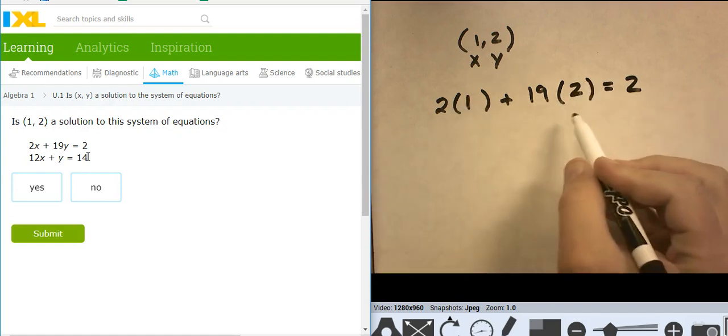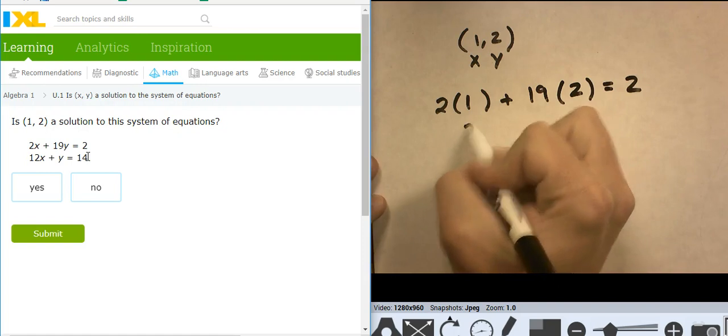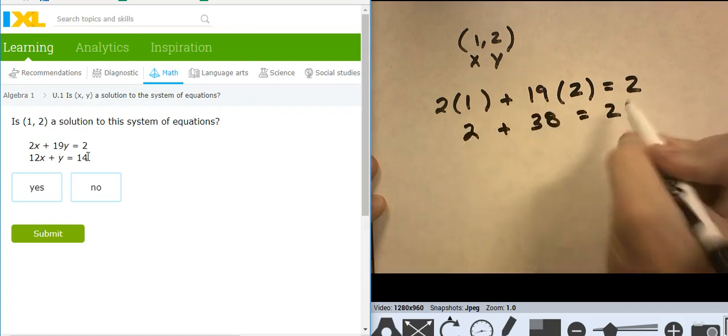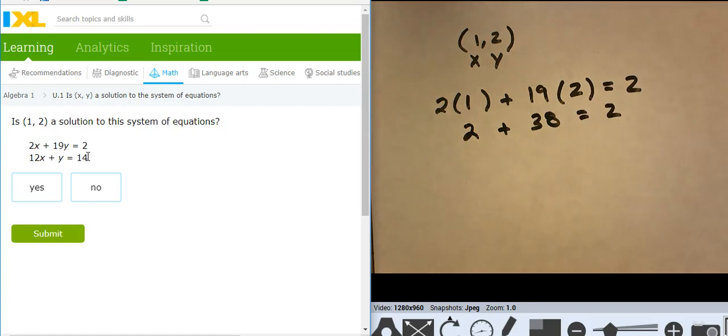And right away, I can tell this isn't going to work, because this is 2 plus 38 does not equal 2. So is that a solution? I'm not even going to check the second equation, because I know it's not a solution to the first one. It has to work in both equations in order to be a solution. So I'm going to say no, this is not a solution.